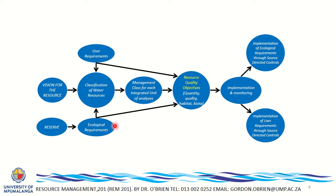We've got to decide the trade-offs to get sustainability right. Once we've decided the class, we need to determine how to actually achieve it. That is where the methodology for resource quality objectives comes in. The Act requires: a vision for the resource, establishing the reserve, classifying the resources, and setting RQOs — those are the four puzzle pieces we looked at yesterday.